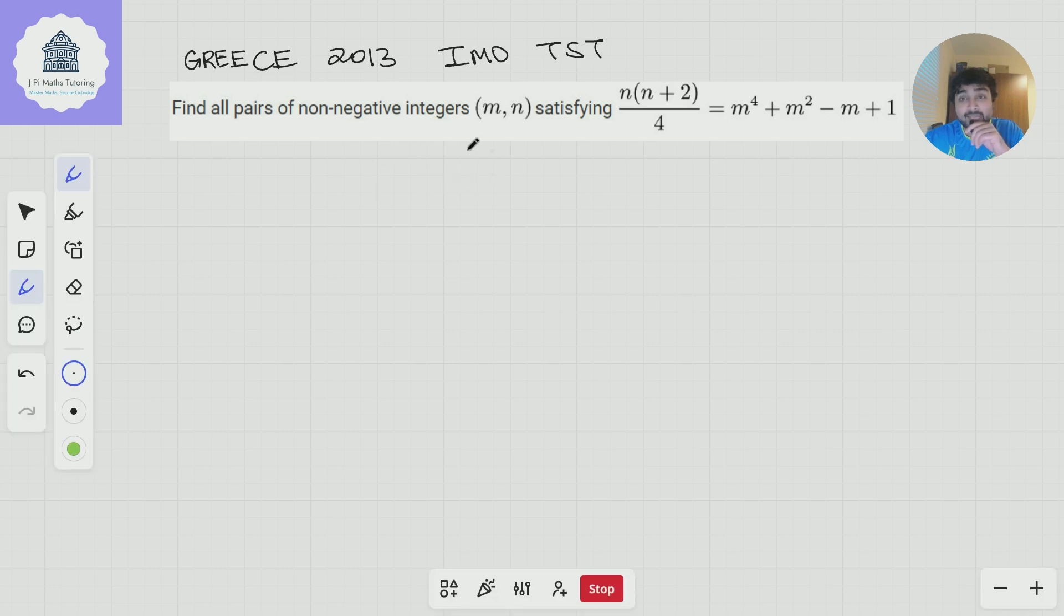We know m and n are non-negative integers, but immediately I see the left side has a fraction, the right hand side doesn't. So this is clearly an integer, so the left side better be an integer too. I notice that n and n+2 have the same parity. If one is odd, the other is odd. If one is even, the other is even. So n cannot be odd, because if n was odd, we'd have an odd number times an odd number, which is odd. And if I divide that by 4, that's definitely going to be a fraction. So I know n is even, so I can replace it with 2k, where k is some non-negative integer.